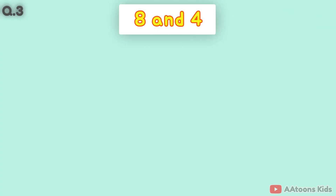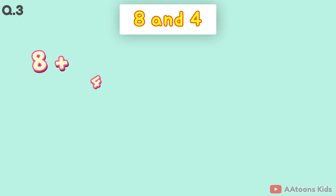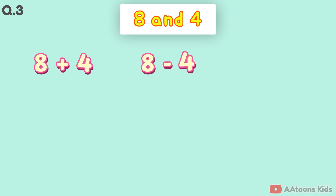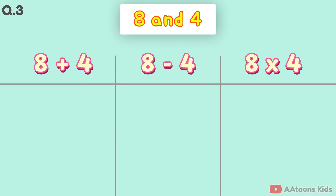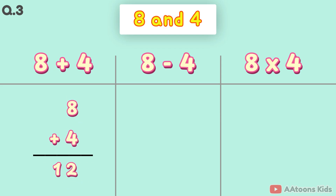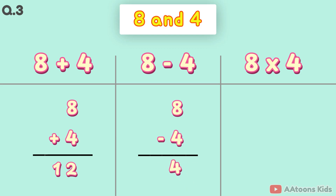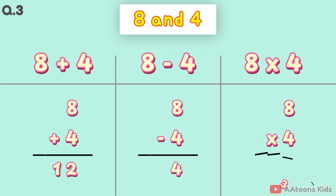The two numbers are 8 and 4. 8 plus 4 is 12. 8 minus 4 is 4. 8 times 4 is 32.